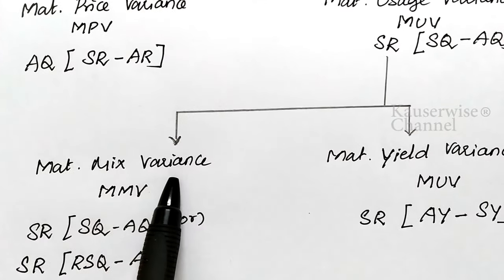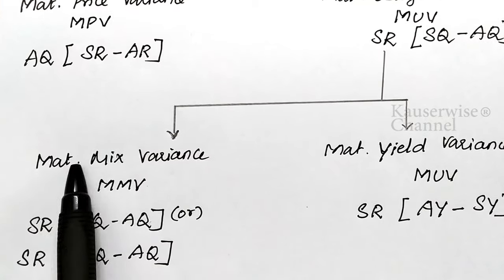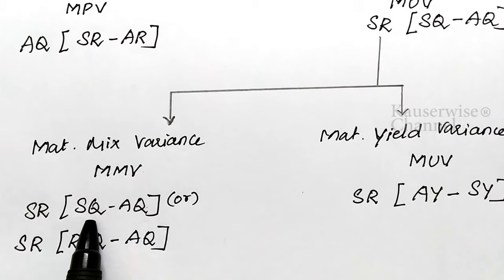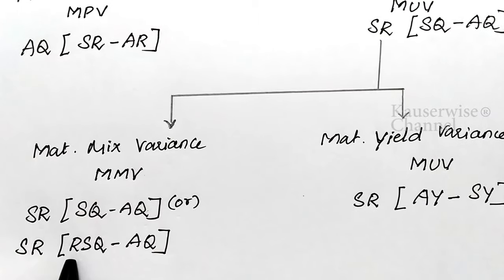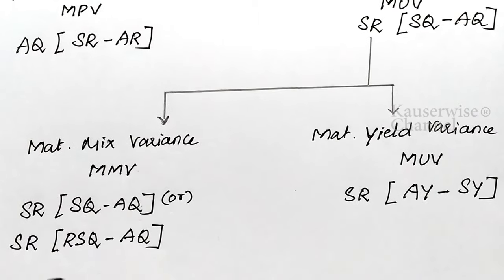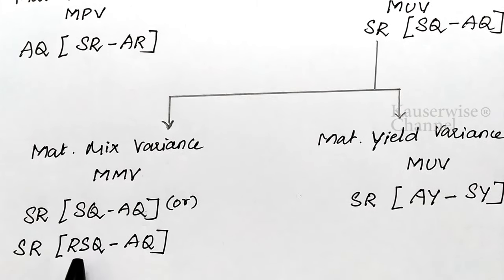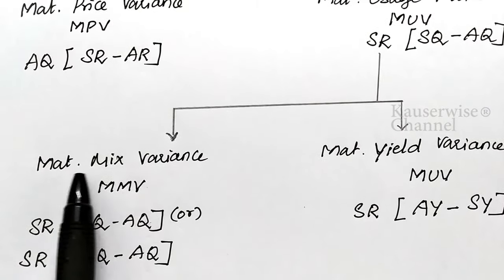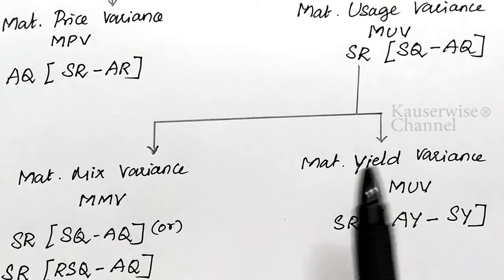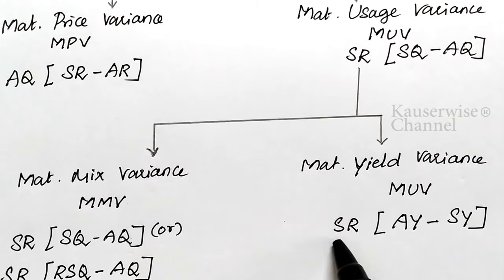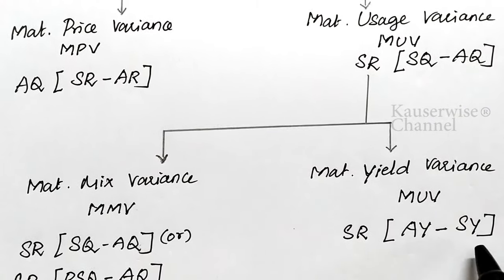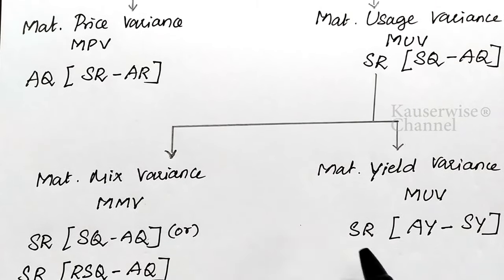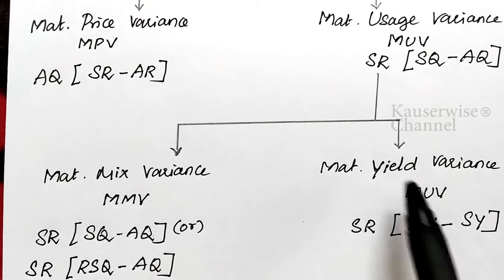For material yield variance, the formula is: standard rate × (actual yield − standard yield). Compare actual yield and standard yield, then multiply by standard rate. In this video we are going to see one problem related to material cost variance, price variance, and usage variance. In the next video we will see material mix variance and yield variance along with numerical problems.